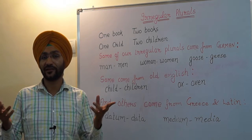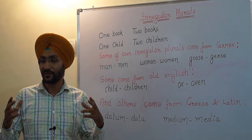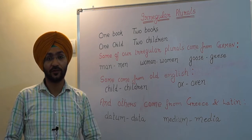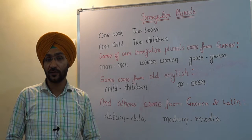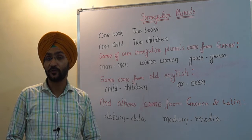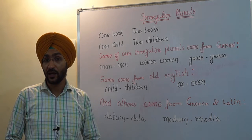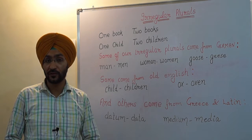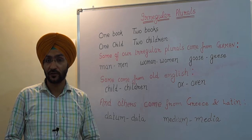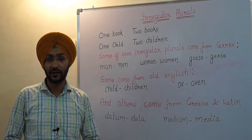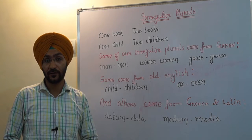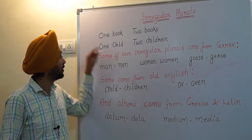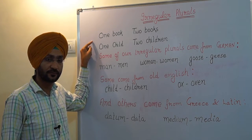This is English Grammar. I am Kamaldi from English Tweaks. Today I am going to go over the irregular plurals. As we know, most plurals in English just follow the add an S rule. For example, one book, two books.